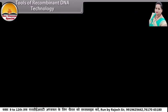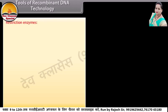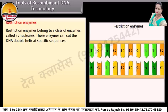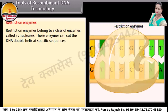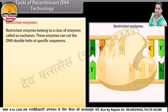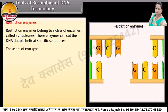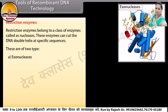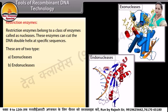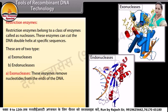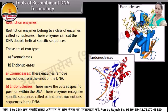Tools of recombinant DNA technology. Restriction enzymes belong to a class of enzymes called nucleases. These enzymes can cut the DNA double helix at specific sequences. There are two types: exonucleases and endonucleases. Exonucleases remove nucleotides from the ends of the DNA. Endonucleases make cuts at specific positions within the DNA.